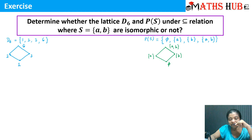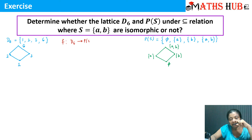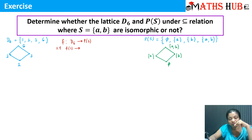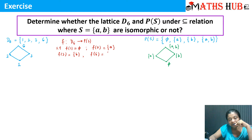The first step is to define a mapping F from the first set to the second set. We define a mapping F from D6 to P(S) by looking at the structures. F(1) goes to the empty set, since 1 is the bottom element in D6 and the empty set is the bottom element in P(S). Similarly, F(2) goes to {A}, F(3) goes to {B}, and F(6) goes to {A, B}.